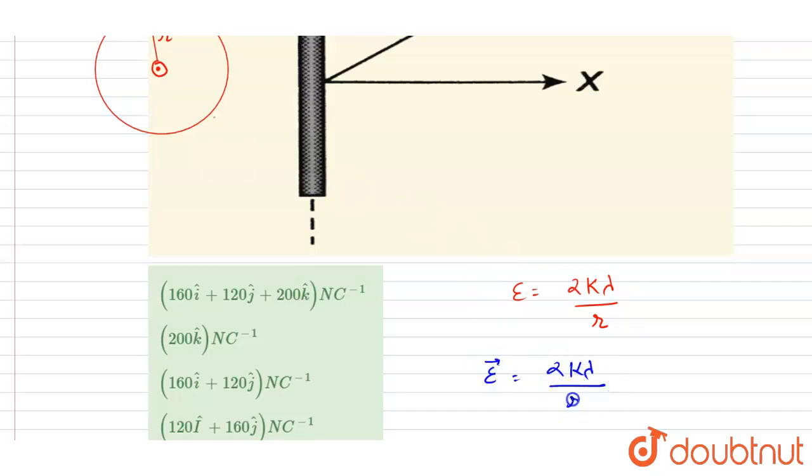It will be 2kλ/r, and the direction is a unit vector along the radius vector, taking the wire as the center. This will be the direction where r is the magnitude.